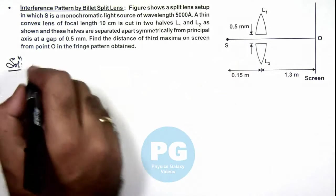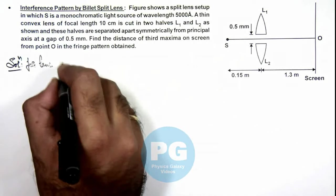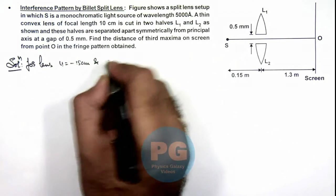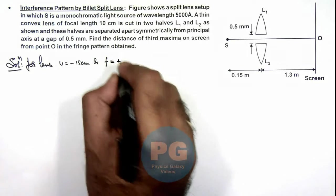Here we can consider for lens, we can take u to be minus 15 centimeter and its focal length we can consider as plus 10 centimeter.